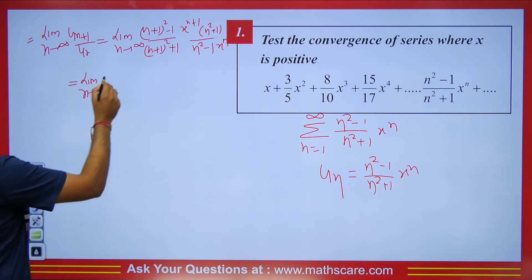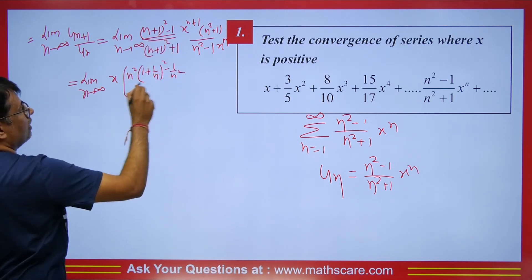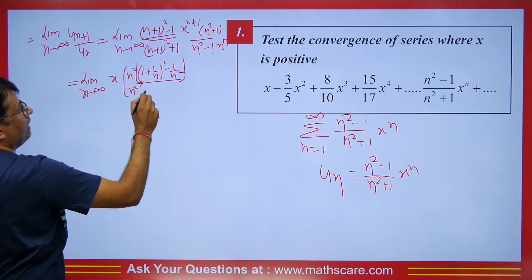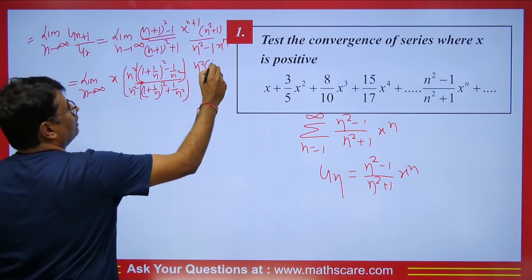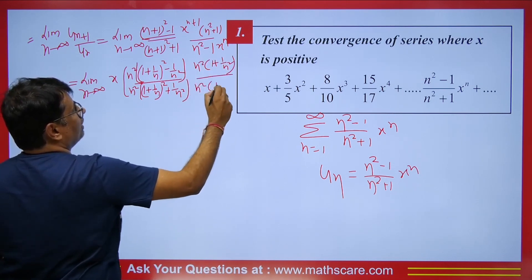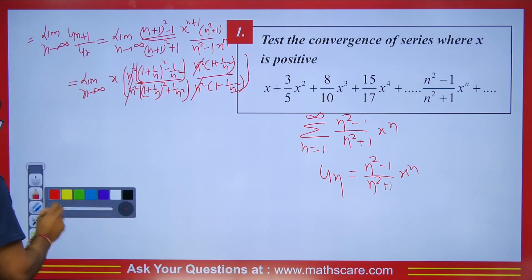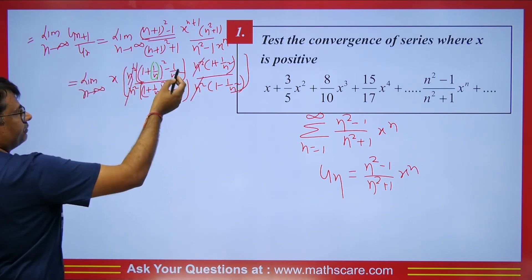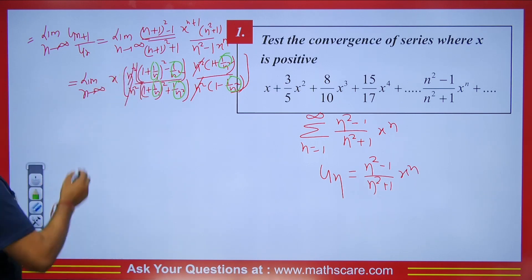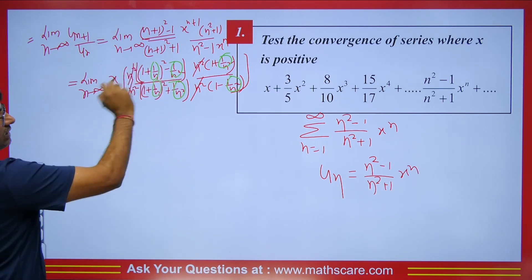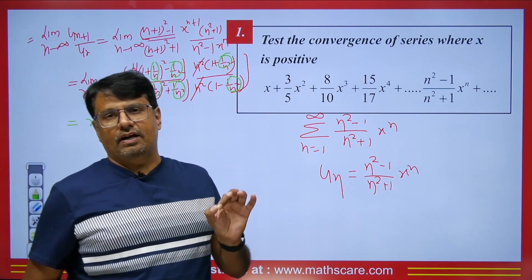Taking n² as common from numerator and denominator, terms like 1/n² and 1/n all go to 0 as n → ∞. We are left with 1×1/(1×1), multiplied by x, giving the limit equal to x. So the series converges when |x| < 1.